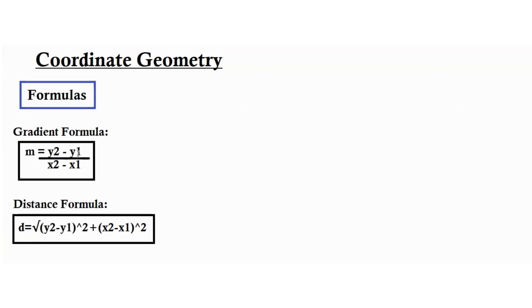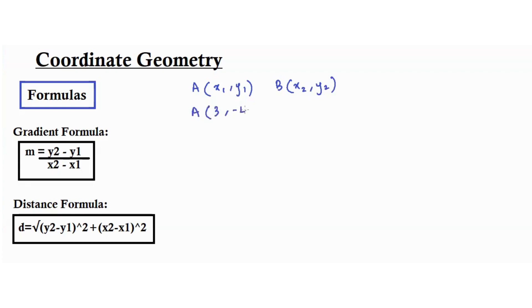The gradient formula says m equals y2 minus y1 over x2 minus x1, where the variable m is used to denote the gradient. Let's assume coordinates A are x1 and y1, and coordinates B are x2 and y2. So A has the value of (3, -4) and B is (2, -1).